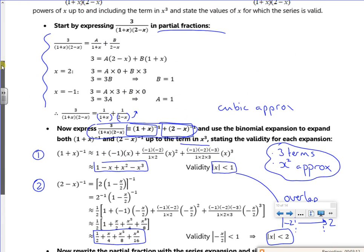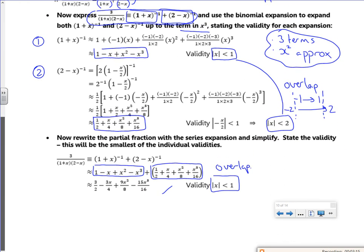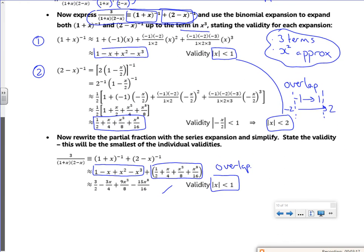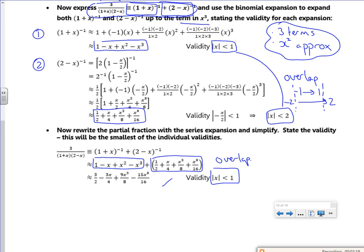So just to recap, do partial fractions, take the fractions up so it's an index notation, and do binomial expansions on each one.